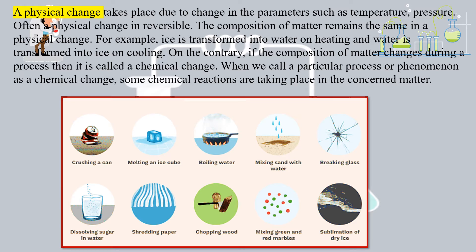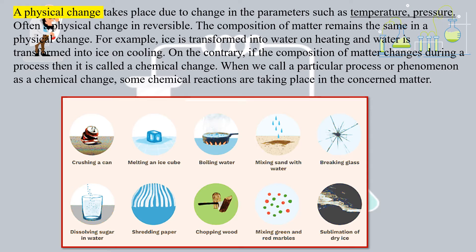On the contrary, if the composition of matter changes during a process, then it is called a chemical change. When we call a particular process a chemical change, some chemical reactions are taking place in the concerned matter. Remember simple examples like rusting of iron or fermentation — these will help you remember chemical changes.